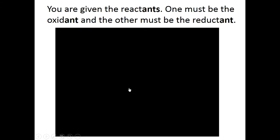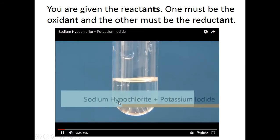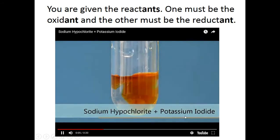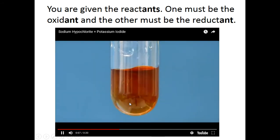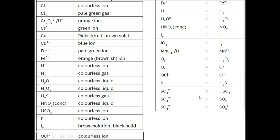So here's now another reaction. We have sodium hypochlorite and potassium iodide. The sodium is again a spectator ion, so is potassium. Notice we had a colourless solution, added another colourless solution, and it went this red-brown. So if we have our tables again, we look for our hypochlorite and for our iodide.